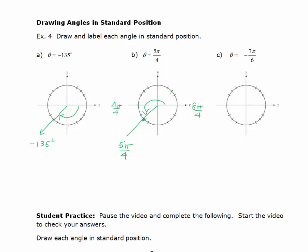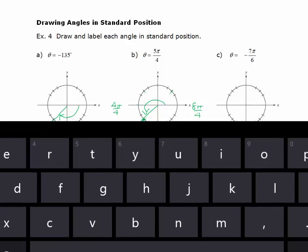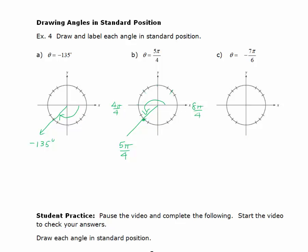For negative 7 pi over 6, I'm going to use that same idea, only using a denominator of 6. Since this is negative, I've got to go clockwise. I know that negative pi is right here, which would be negative 6 pi over 6. So if I go from here to here, I've gone negative 6 pi over 6. I want to go one more pi over 6. So this angle right here would be negative 7 pi over 6.